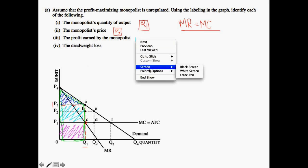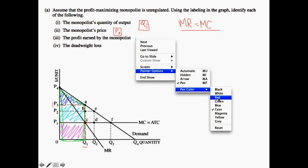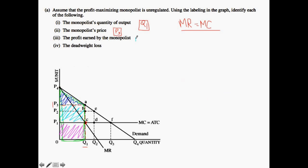So let's write that down. The profit rectangle is P3, P1, A, and C — that would be the profit earned by the monopolist, because this is your total cost area, this is your consumer surplus, and this is your monopolist profit.